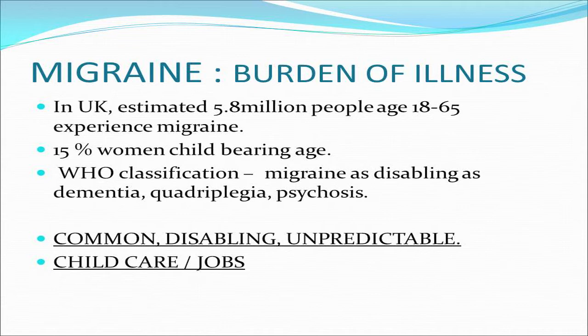Why are migraines important? Migraines are common and disabling, but the key issues are that they affect young, healthy people and are unpredictable. My wife gets migraines — one morning I woke up going to work and she couldn't lift her head off the pillow. The World Health Organisation classifies a patient suffering from migraine as being as disabled as someone with quadriplegia, psychosis or dementia. This highlights the socio-economic impact: migraine sufferers are young, they've got jobs, they're looking after children, and it's unpredictable. If you knew a week on Tuesday you were going to have a migraine, you could arrange childcare and cancel work. Those are the reasons why there's a significant socio-economic burden.